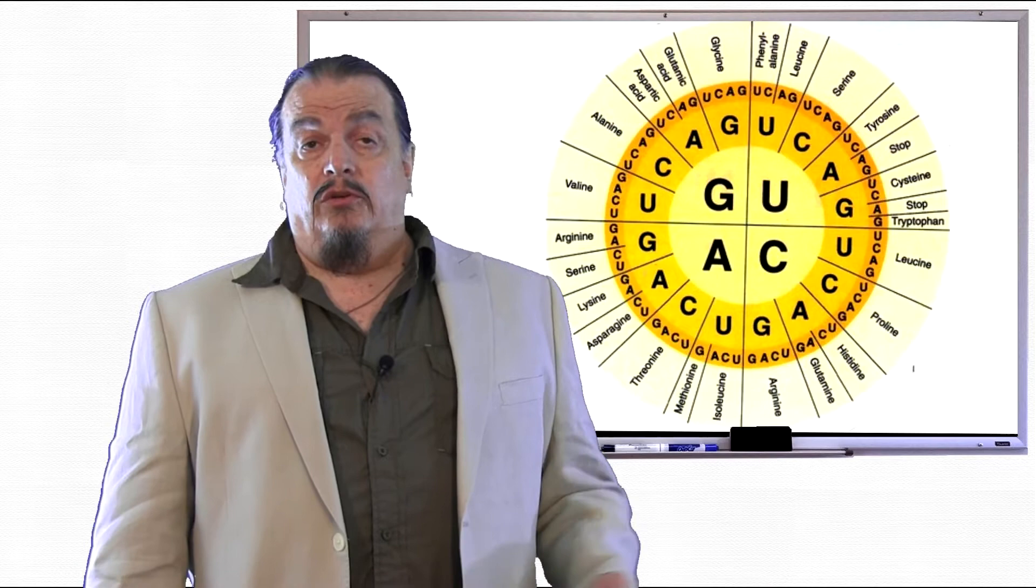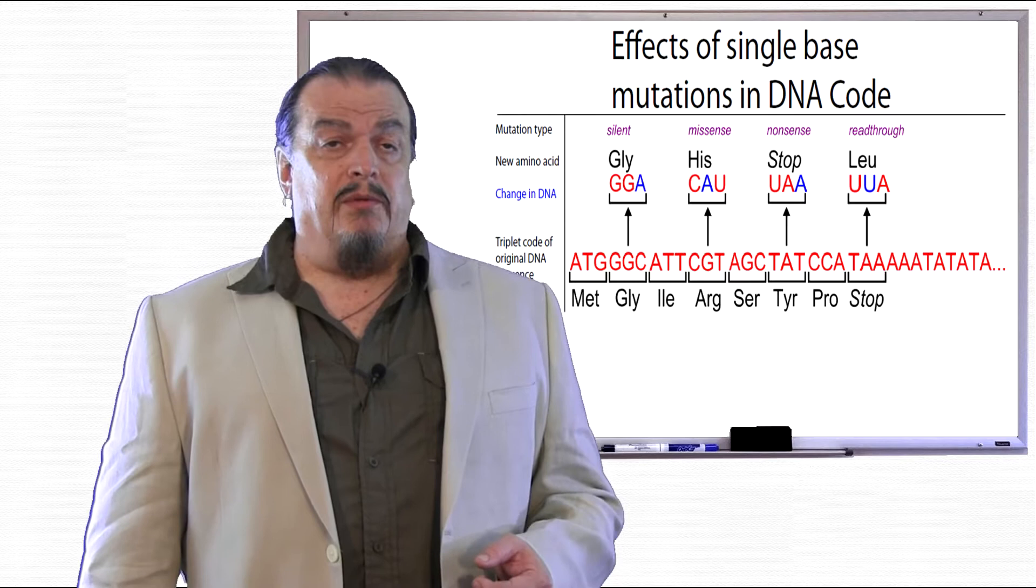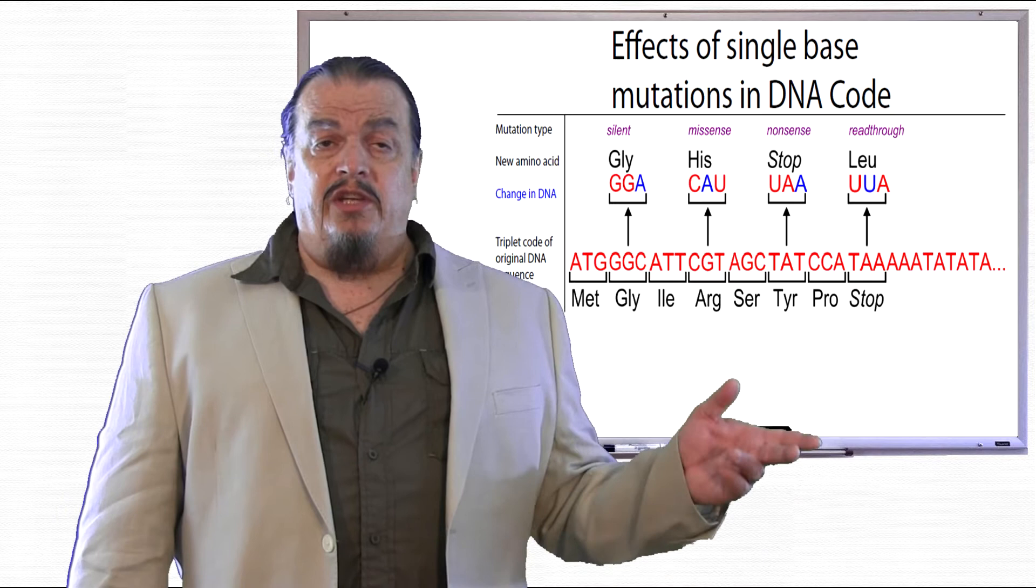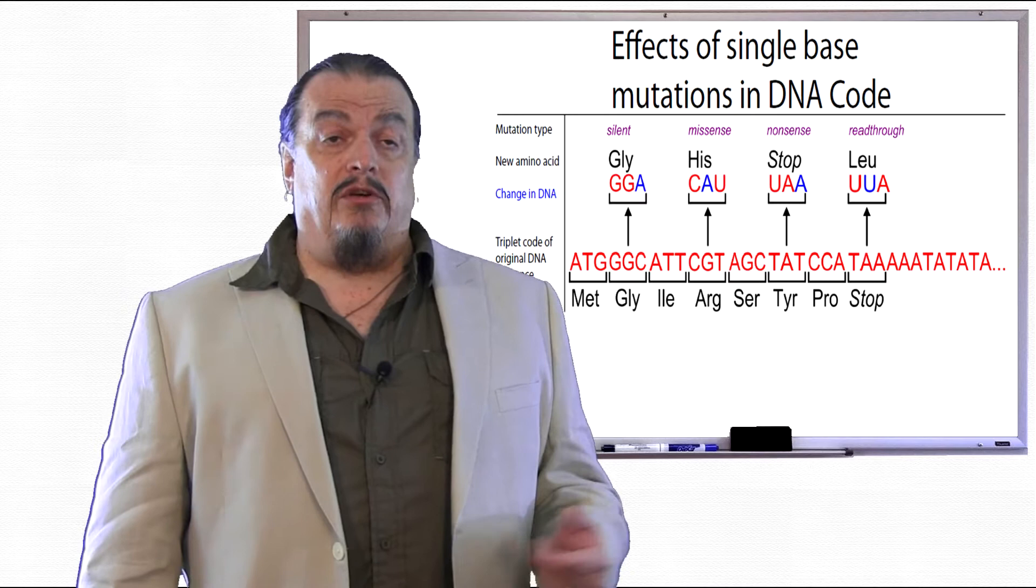Now look at what happens when a codon becomes jumbled and doesn't read as the same amino acid. It's called a missense mutation. Looking at the diagram again, this time the guanine in a CGT codon is replaced with adenine, which makes a totally different amino acid. CAU, because thymine translates to uracil. So before, you had an amino acid called arginine, but by making the change of the base, you get histidine instead.